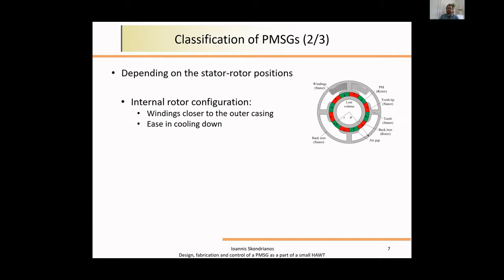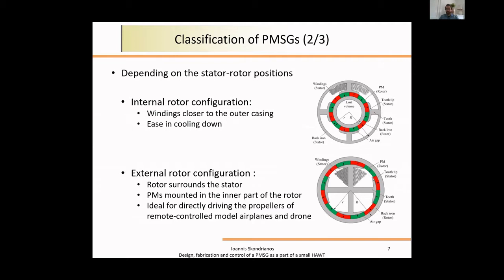Depending on the rotor and stator positions, we have internal rotor configuration where the rotor is inside the stator. The windings are closer to the outer casing, making it easier to cool down since most heat comes from current passing through the copper wires. On the other hand, the external rotor configuration has the stator inside the rotor. Magnets are mounted in the inner part of the rotor, commonly used in propellers of remote control airplanes and drones.